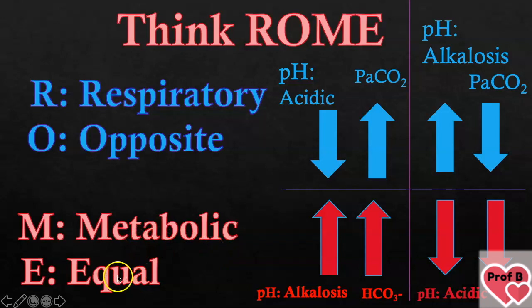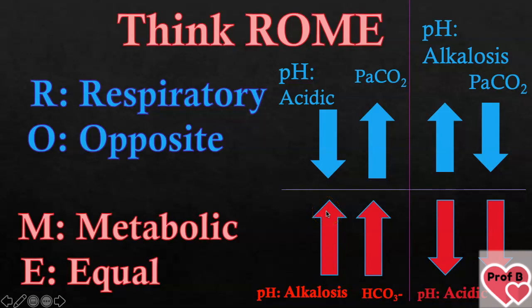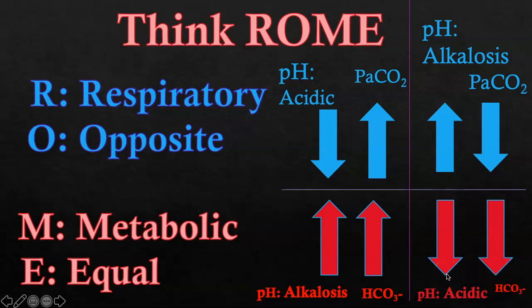Now we move to metabolic. In metabolic, the arrows face the same direction. If the pH is high — meaning basic — the bicarb is also going to be high, because bicarb is basic, so having a lot of it drives the pH up. Conversely, if you have a very acidic, low pH, your bicarb is also going to be low, because bicarb makes something basic.